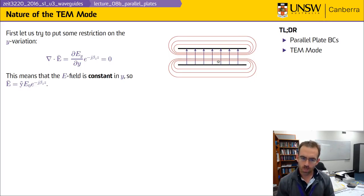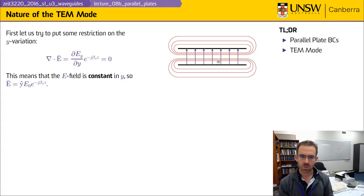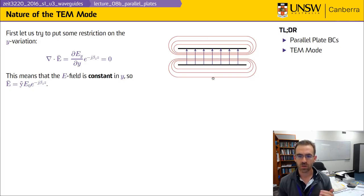We know that the divergence of E must be equal to zero — that's one of Maxwell's equations. When we compute the divergence of E, we take the derivative of the x component with respect to x, plus the derivative of the y component with respect to y, plus the derivative of the z component with respect to z. But we've postulated we have no x and z components, so the only way the divergence can be zero is if dE sub y / dy equals zero.